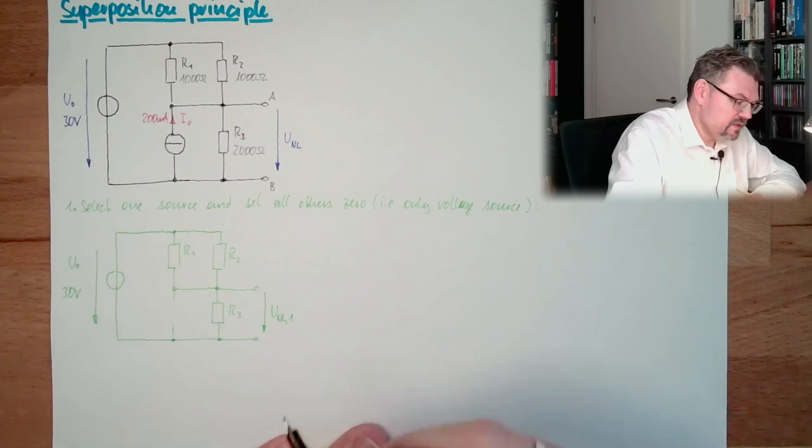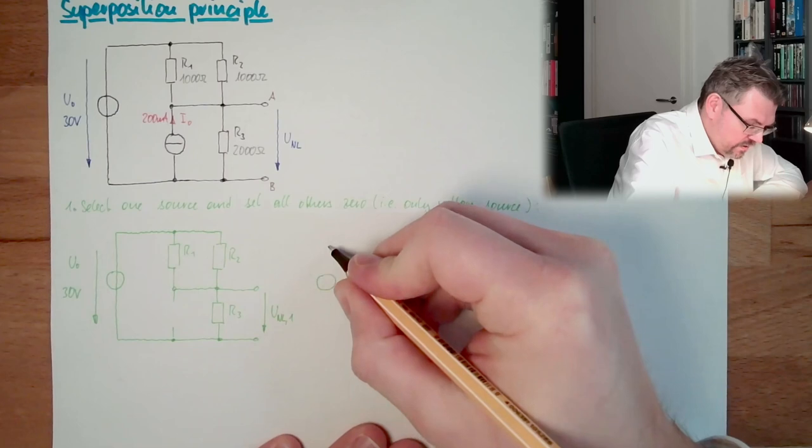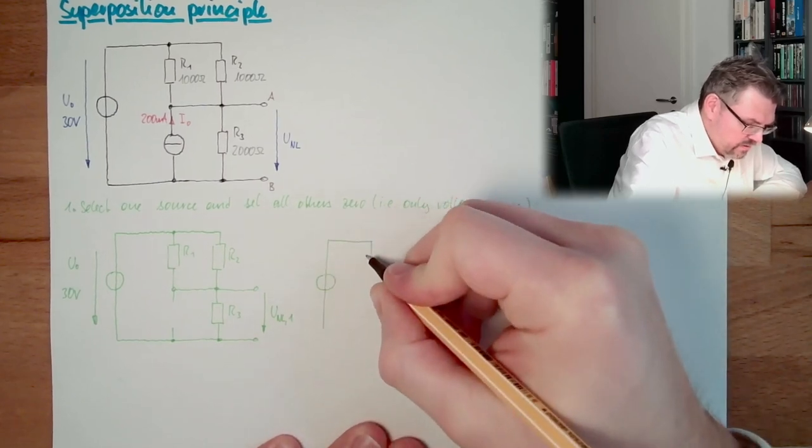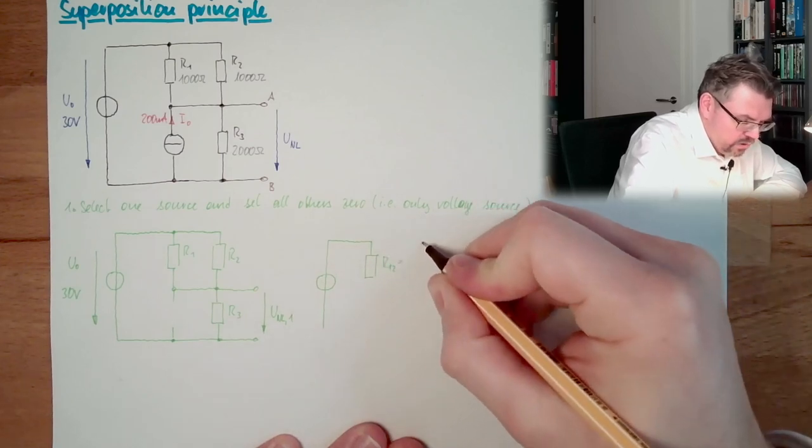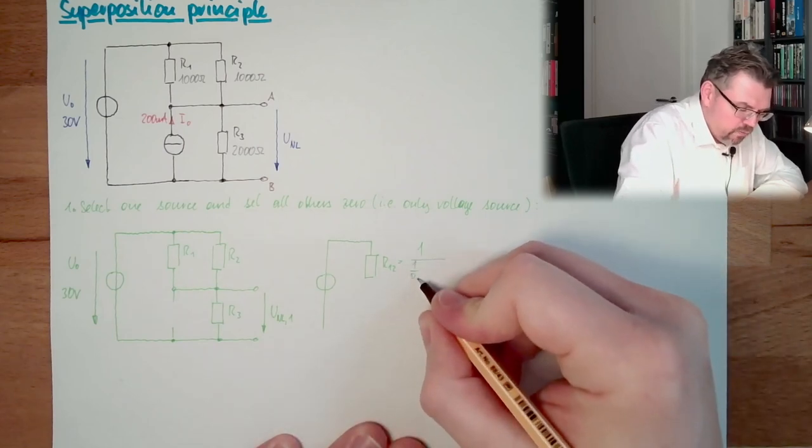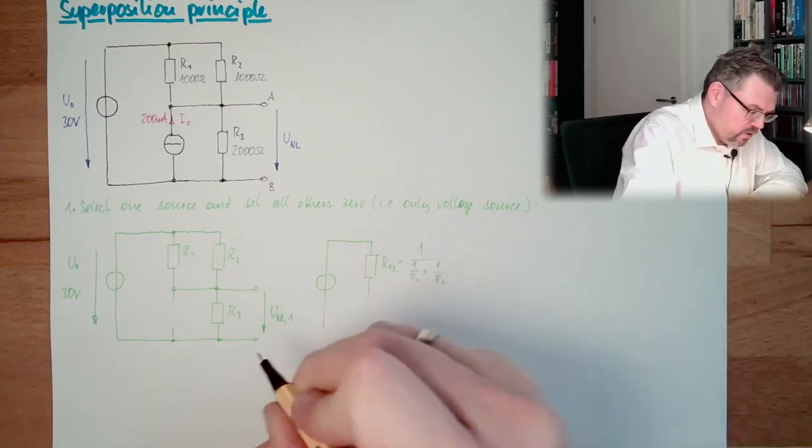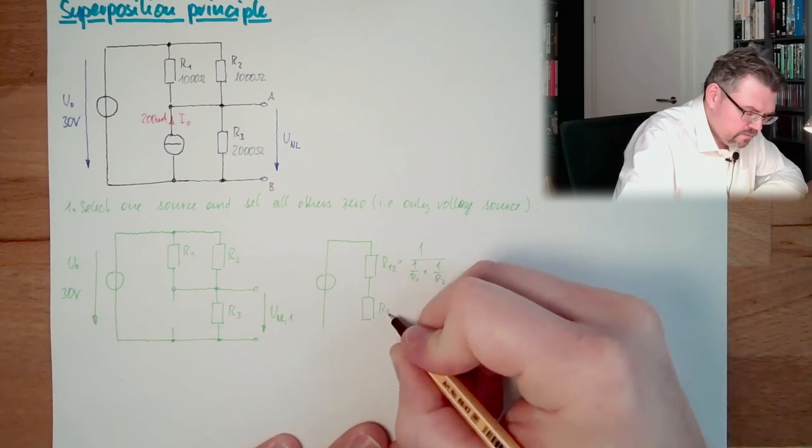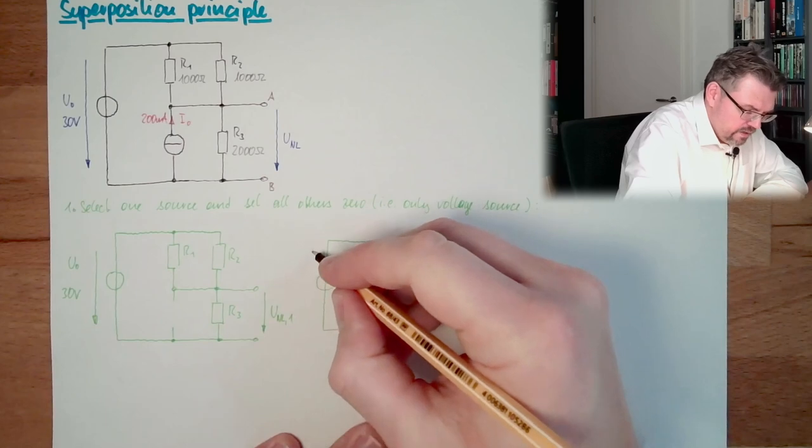What do we know? Those two are parallel. I hope you see this, so those two are parallel. And here it will look like that. R12 is 1 divided by 1 divided by R1 plus 1 divided by R2.